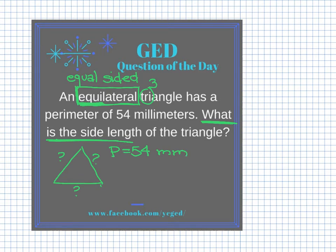I know that the perimeter is 54 millimeters. Remember what perimeter means — it's the distance around the outside of a shape. If I went this far, then this far, then this far, the total distance around the outside of this shape would be 54 millimeters.